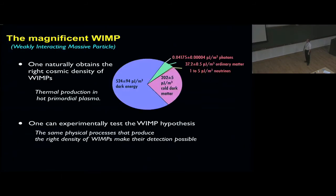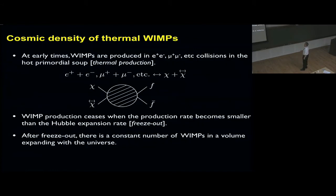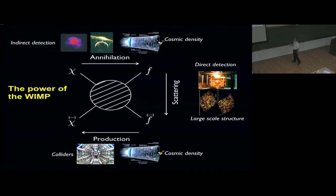WIMPs. WIMPs have been dominating the market of dark matter candidates because the same physical process that produces the right density of WIMPs makes the detection possible. One can experimentally test the idea of WIMPs. They are produced thermally in the early universe in collisions in the plasma—electron, positron, muon and antimuon produce WIMP anti-WIMP pairs. WIMP production ceases when the production rate becomes smaller than the Hubble expansion rate. This is the famous freeze-out. After freeze-out there's a constant co-moving number density of WIMPs.